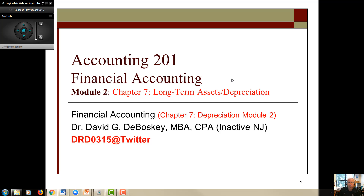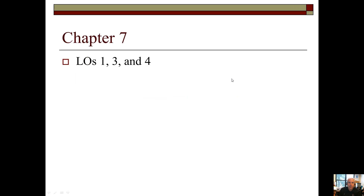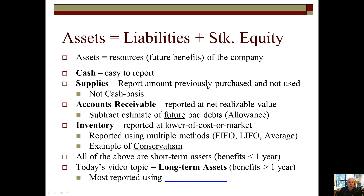Let's go ahead and cover chapter 7 depreciation methods, which address learning objectives 1, 3, and 4. A quick recap: notice our accounting identity at the very top — assets equals liabilities plus stockholders' equity. Remember that assets are resources which must contain future economic benefits of the company.